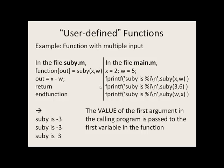We come to our second fprintf statement and we say subby is percent i. We look at the right side of this comma: subby, first argument is 3, second argument is 6. So we go to the function subby. First item, x is 3. Second item, w is 6. 3 minus 6 is negative 3. This variable gets passed as output to the main program, and we print off subby is negative 3.